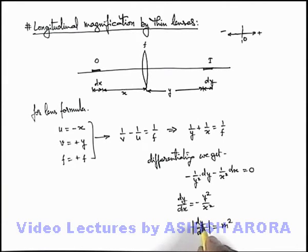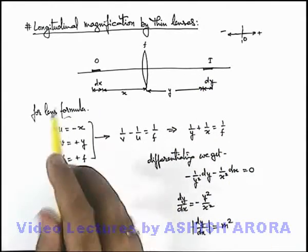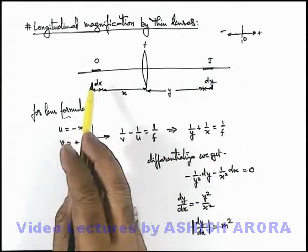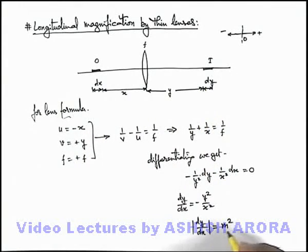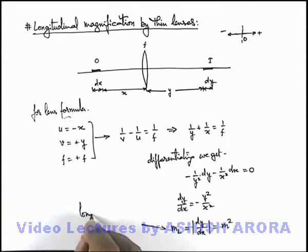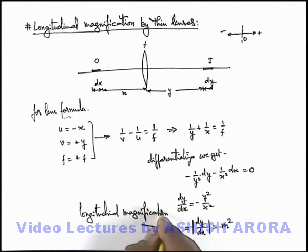In this situation, dy is the width of image along principal axis and dx is the width of object along principal axis. The ratio of their widths along principal axis is given by the square of normal magnification, and this term we write as m_L, and we call this longitudinal magnification.